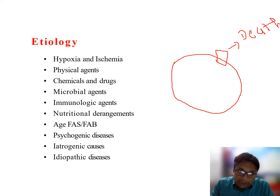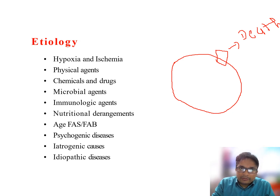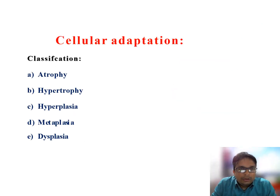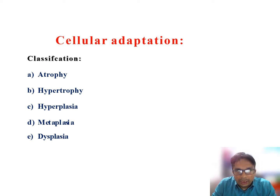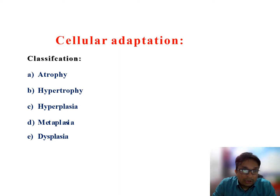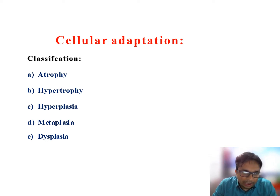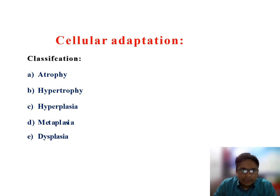Before going to cellular injury, a cell will undergo adaptation. There are four different types of cellular adaptations: atrophy, hypertrophy, hyperplasia, metaplasia, and dysplasia. We will see each type in detail with examples.